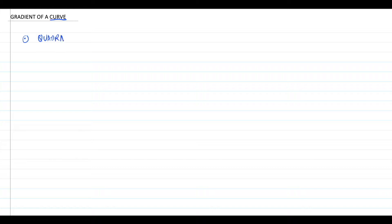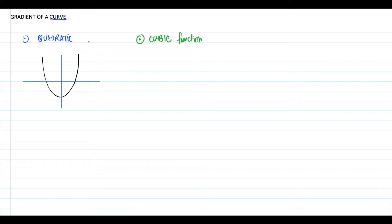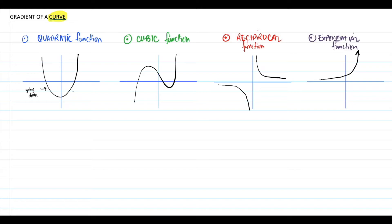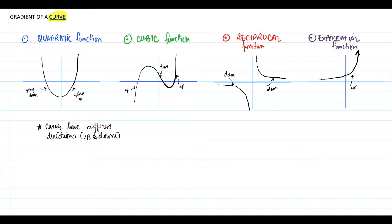Quadratic function, which has a graph that opens upwards like this if the leading coefficient is positive. Cubic functions, which may have a graph that looked like this. Reciprocal functions which could look like this. And exponential functions that increases exponentially in a short period like this. In these functions, the curves contain points in a way that create ups and downs which creates different gradients at different points or parts of the curve.